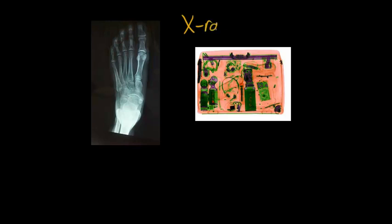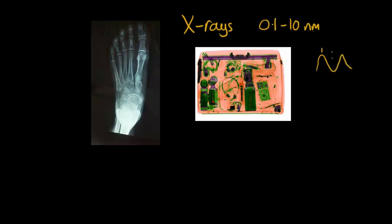Now x-rays are much, much smaller in wavelength. X-rays are typically 0.1 to 10 nanometers. A nano is a billionth of a meter. So the distance from one peak to the next for x-rays is about a millionth of a millimeter.